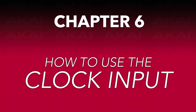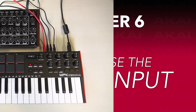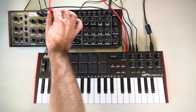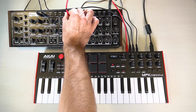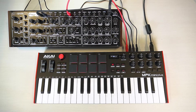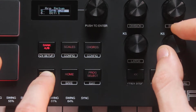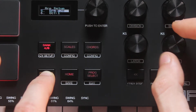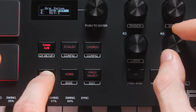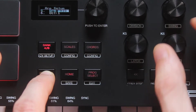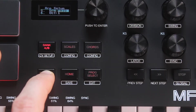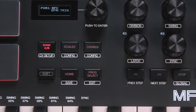Conversely, if you want your secondary unit to control the MPK Mini Plus' tempo, plug one end of the TS cable into its clock input and the other end into the gate or clock output on the second unit, then press and hold the Shift button and turn knob K6 and change the BPM setting to Trig. Now, instead of using its own internal clock, your MPK Mini Plus will use any clock data sent via CV.